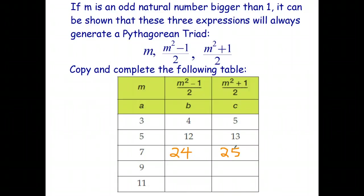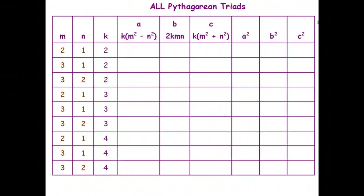So basically, you could choose any odd natural number for m, and these three expressions will generate a Pythagorean triad. Now, it turns out that that particular formula doesn't generate all the Pythagorean triads. So if you want to get all the Pythagorean triads, you have to use some slightly more complicated formulas.